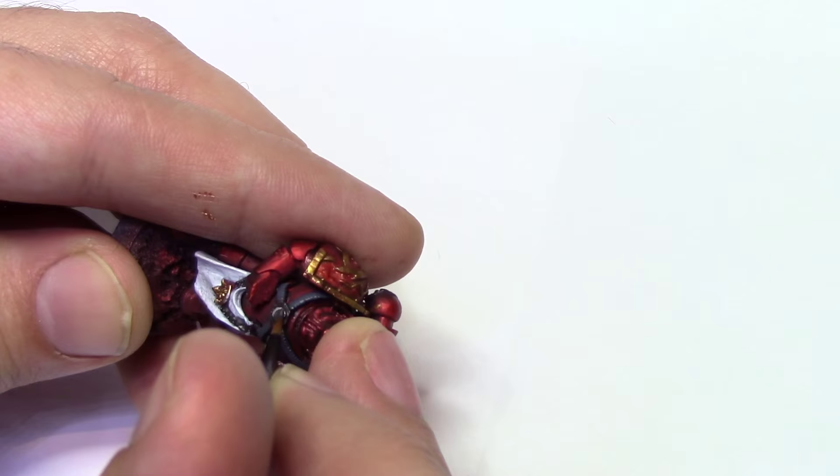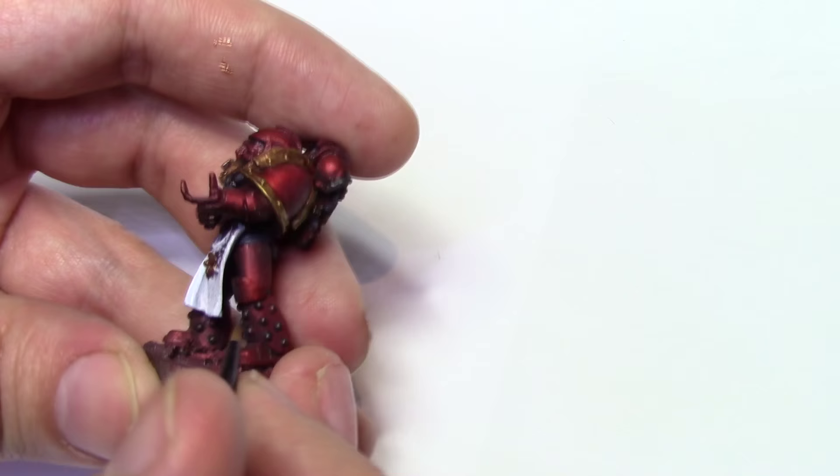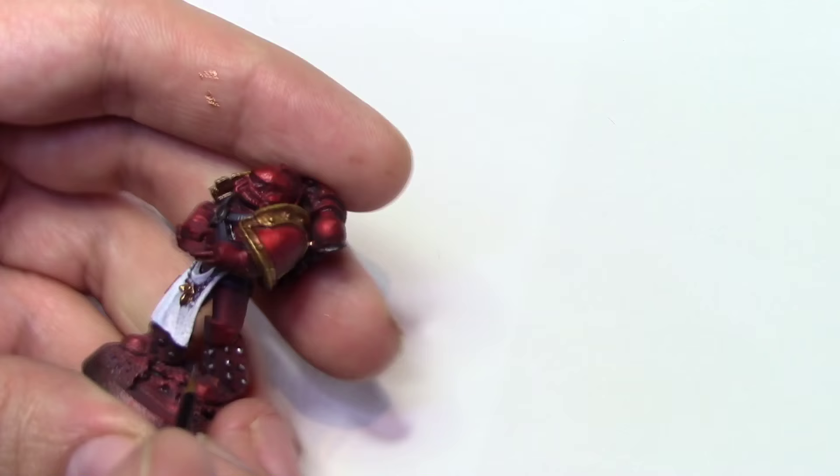Okay, now we're going to use the Vallejo Model Air Chrome, and this is just going to highlight up the little silver bit, so like the chain, the little chest piece, and some of the vents on the back. Oh, also these studs which I really regret doing. So yeah.